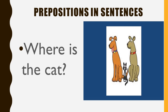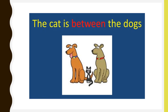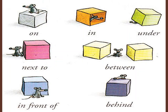Where is the cat? Very good — the cat is between the dogs. Now let's sing these prepositions. Sing with me: on, in, under, next to, between, in front of, behind. Very good!